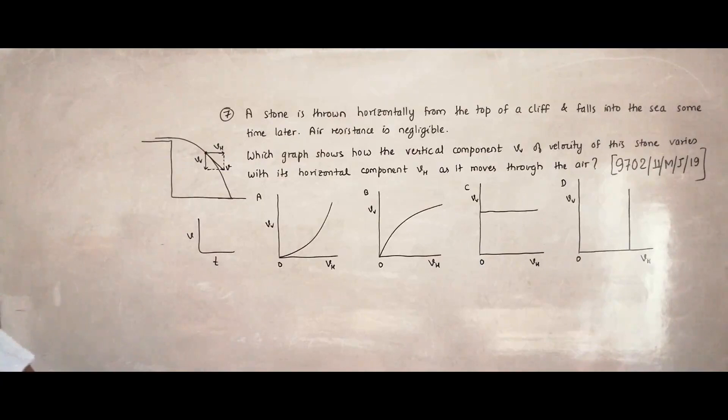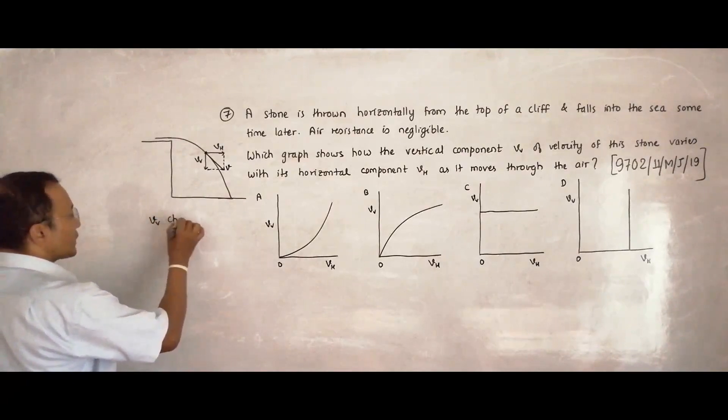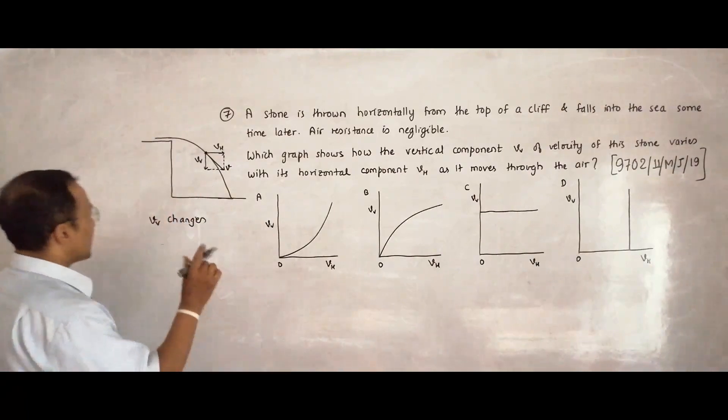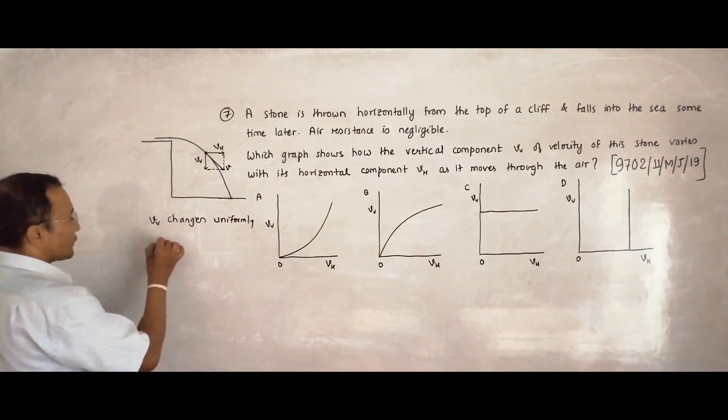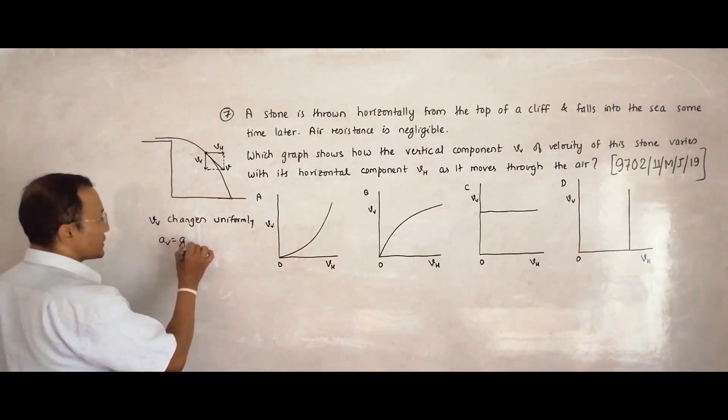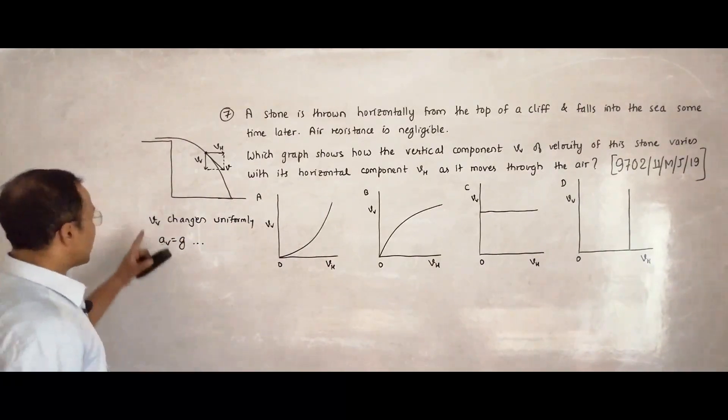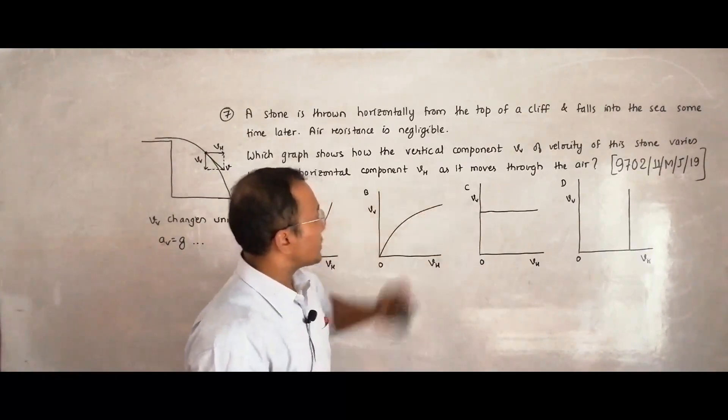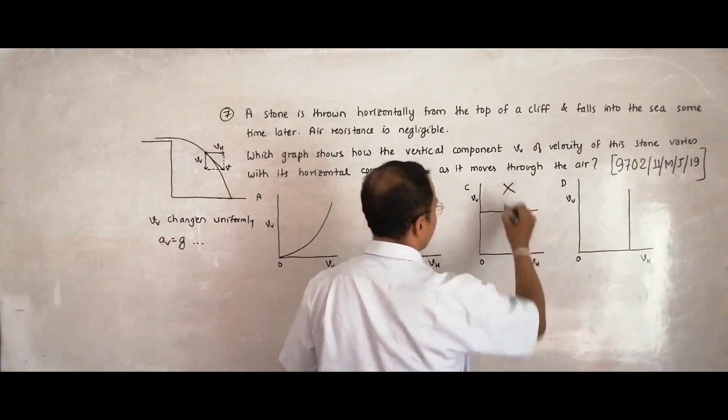Now what we have to remember is, in this type of projectile, we have the vertical velocity changes. The vertical velocity changes and it changes uniformly. It is because we have the vertical acceleration is equal to g. And when there is g, g means that the change is uniform. So g is the rate of change of velocity which is 9.81. So V vertical changes. So that means, if I look at these graphs, choice number C disqualifies. Because it says that the vertical velocity is constant. So this thing disqualifies from the very beginning.